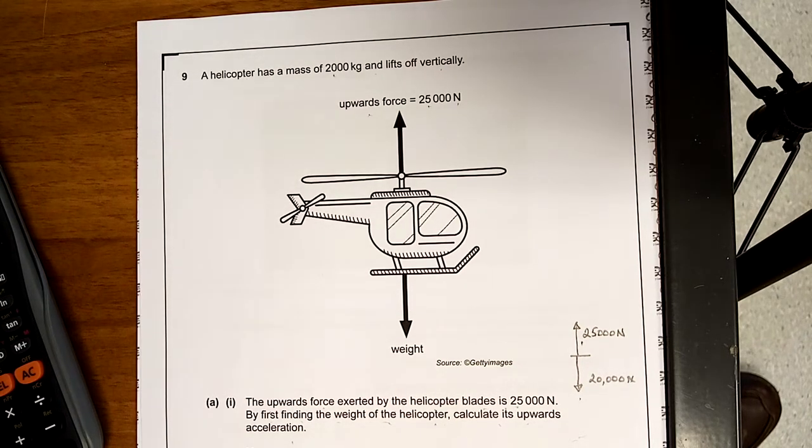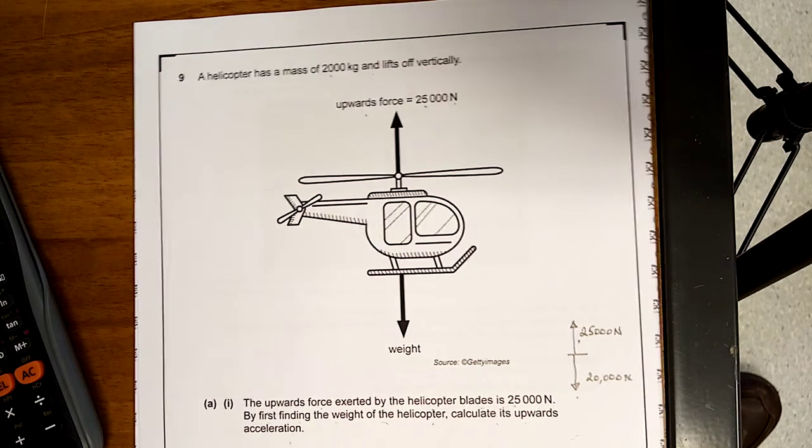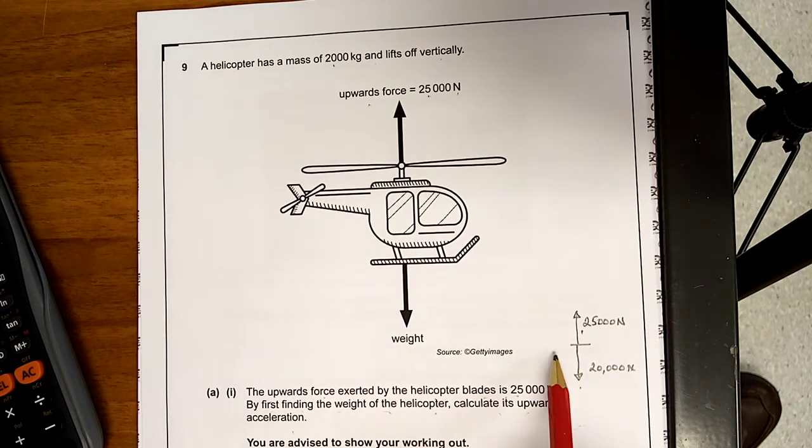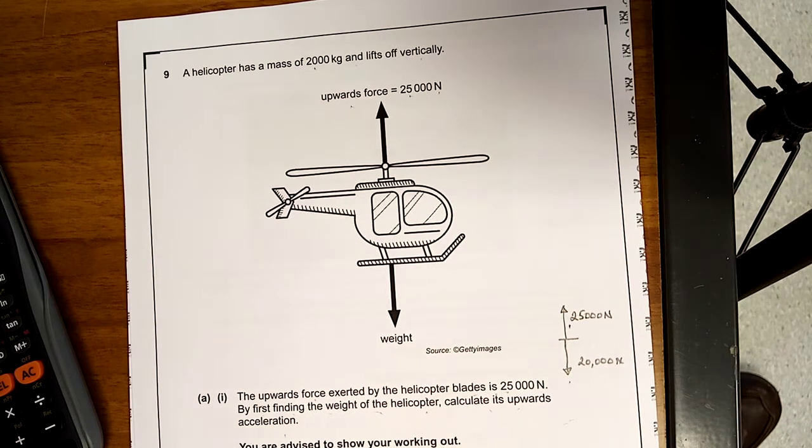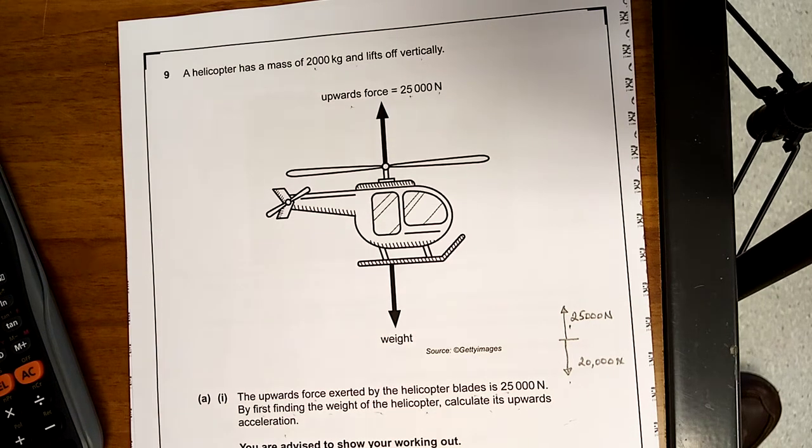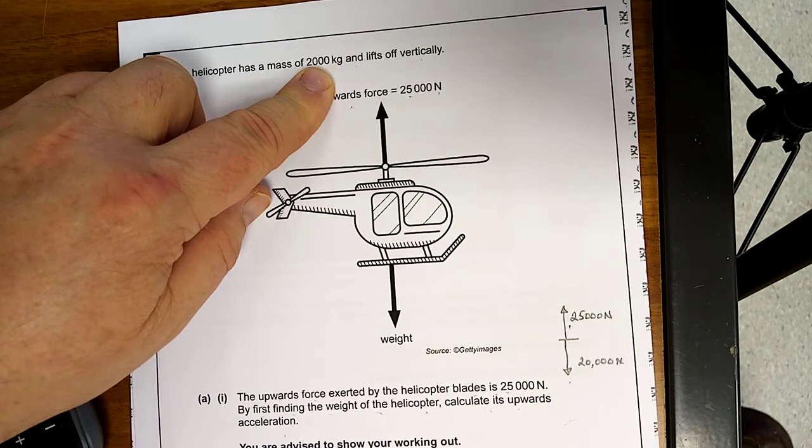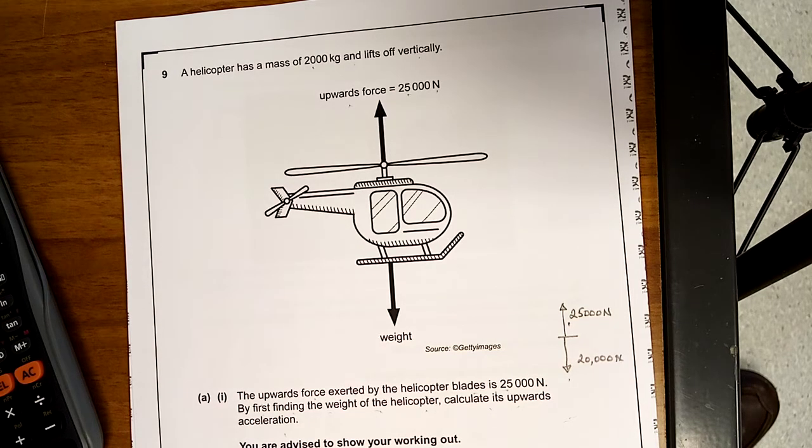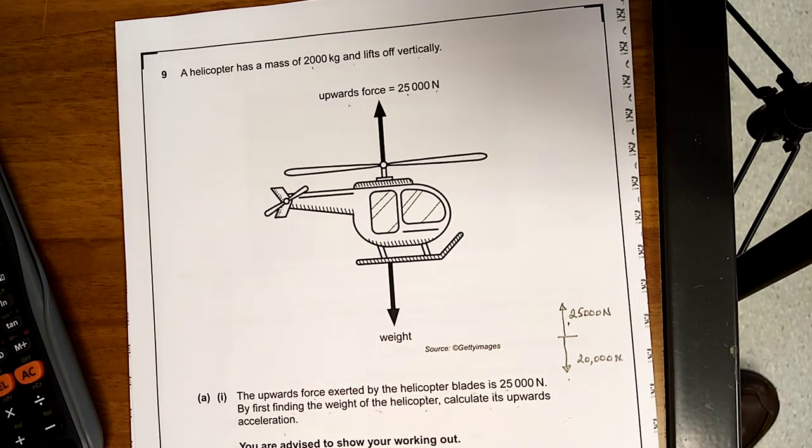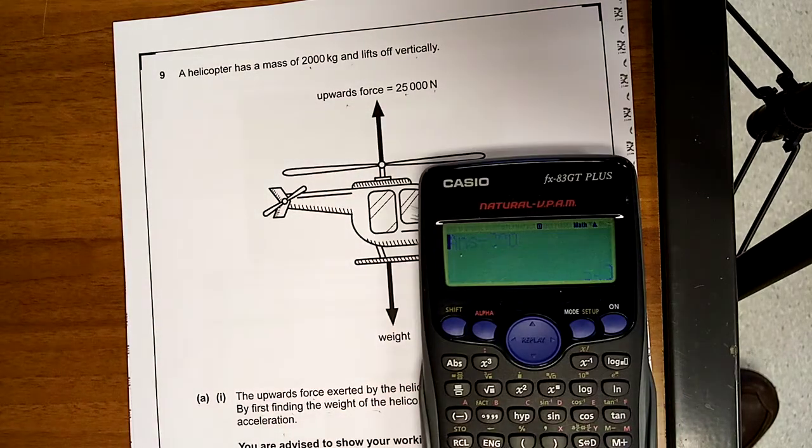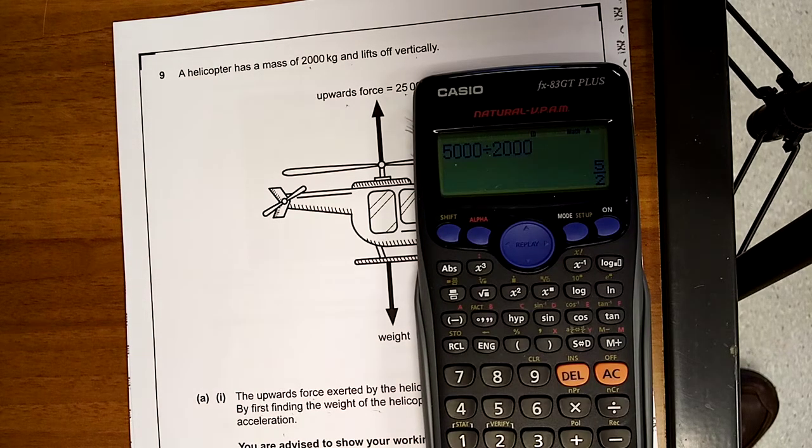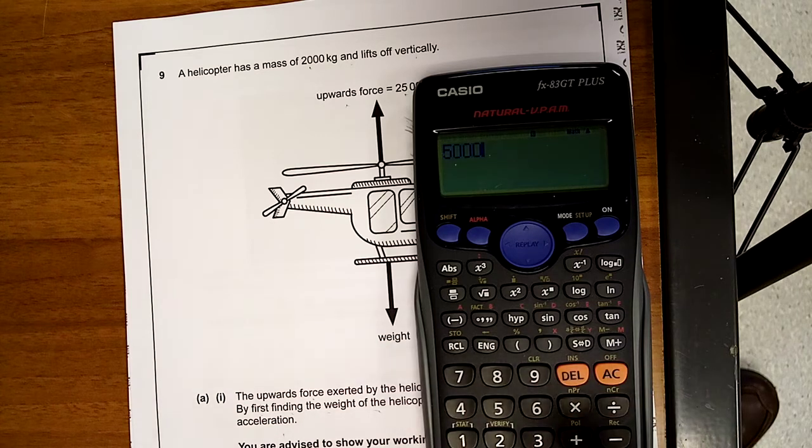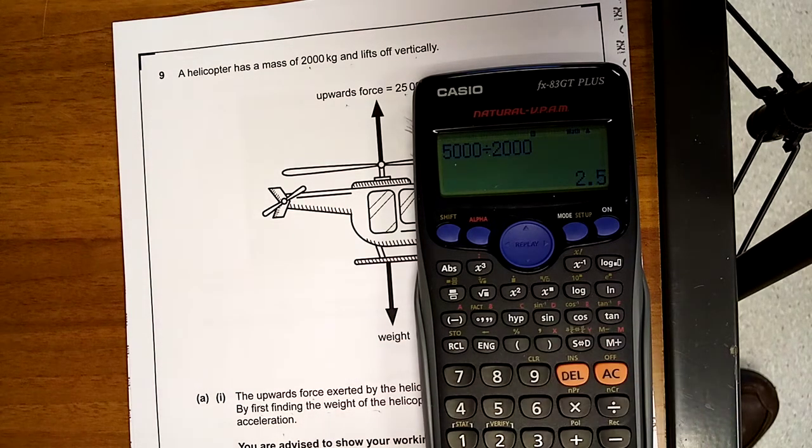Now, I want to find the acceleration. So, I know from Newton's second law, the resultant force is equal to mass by acceleration. So, the resultant force, well, I know there's 25,000 up and there's 20,000 down. Now, be careful. And the mass is 2,000 kilos by A. So, 5,000 is equal to 2,000 times A. So, 5,000 over 2,000 is equal to A. Again, do it in no rush. 5,000 divided by 2,000, 2.5. Check it. 5,000 divided by 2,000, 2.5.